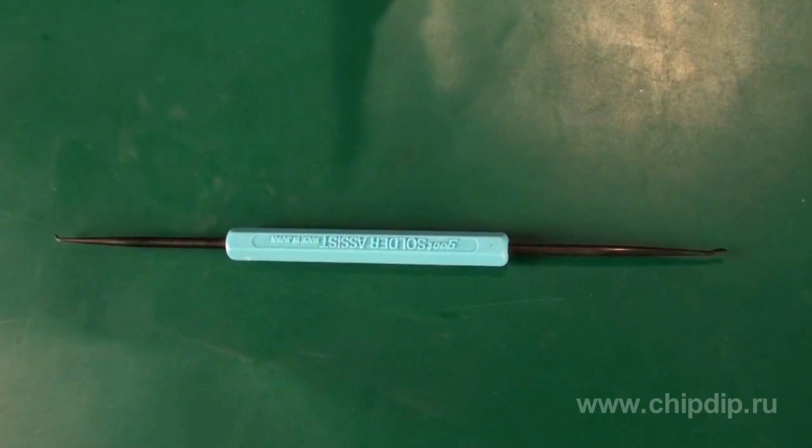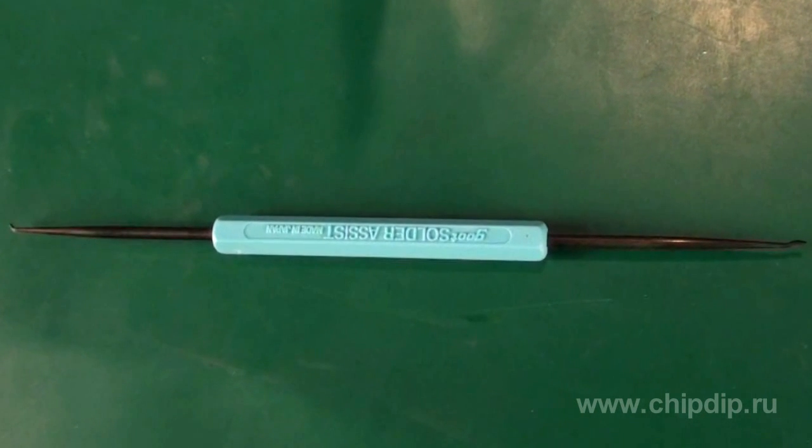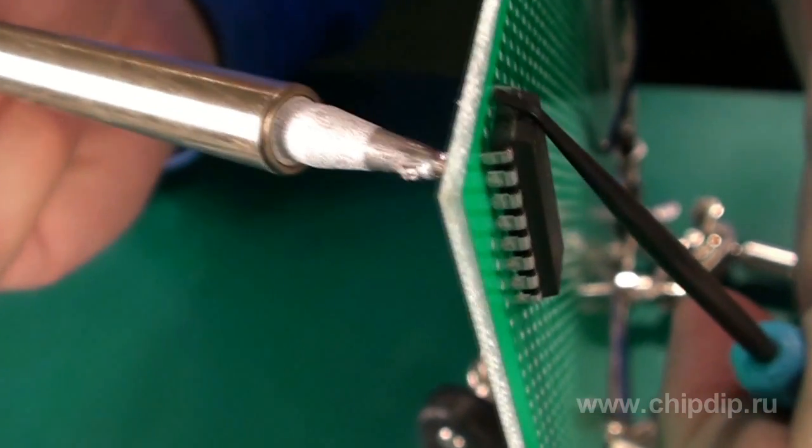The clamp serves to hold various elements during soldering of resistors, capacitors, transistors, or integrated circuits.